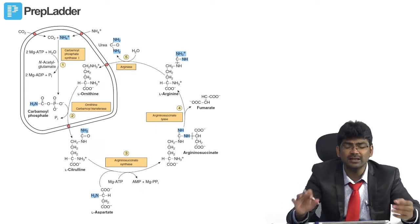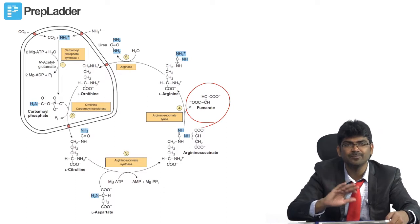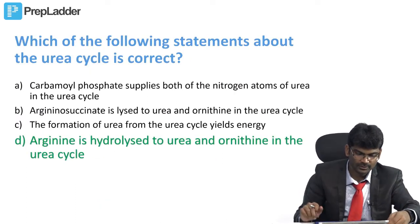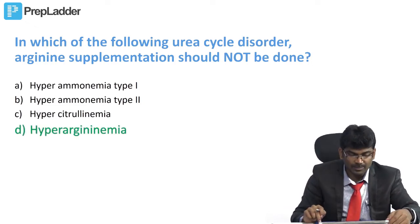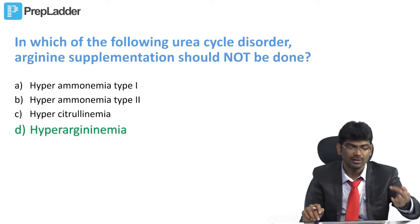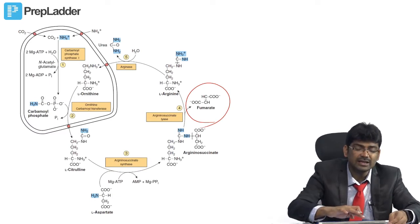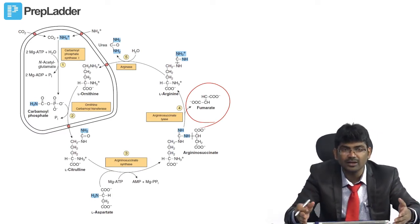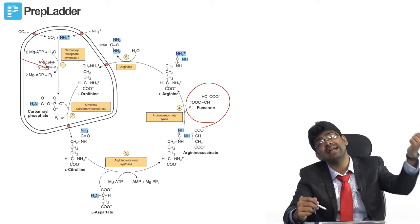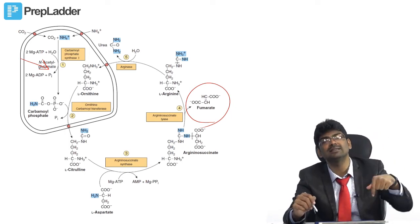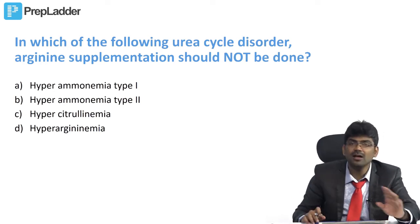Regarding energy requirement of the urea cycle, do not go into deep details. Some say fumarate goes to the TCA cycle and provides energy — do not think that way. In urea cycle disorders, arginine supplementation should not be done in hyperargininemia since arginine is already elevated. In other disorders, arginine supplementation is given because arginine is a semi-essential amino acid and activates N-acetylglutamate synthase, which in turn activates CPS1.